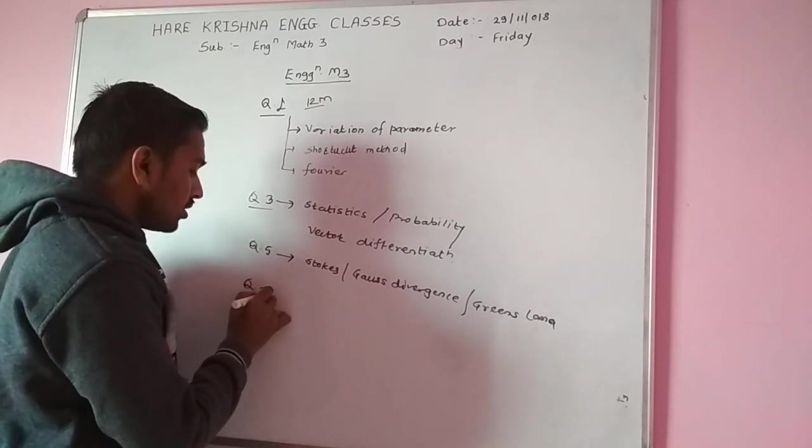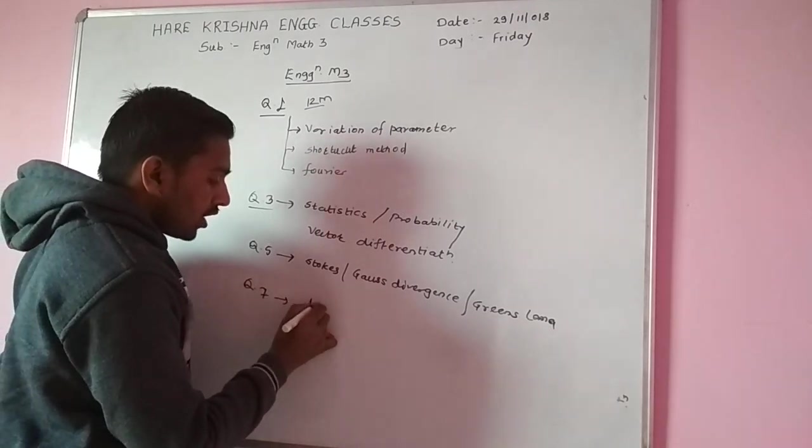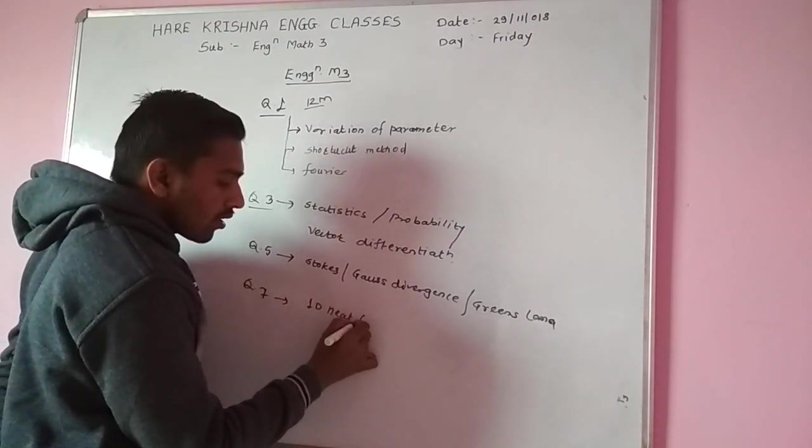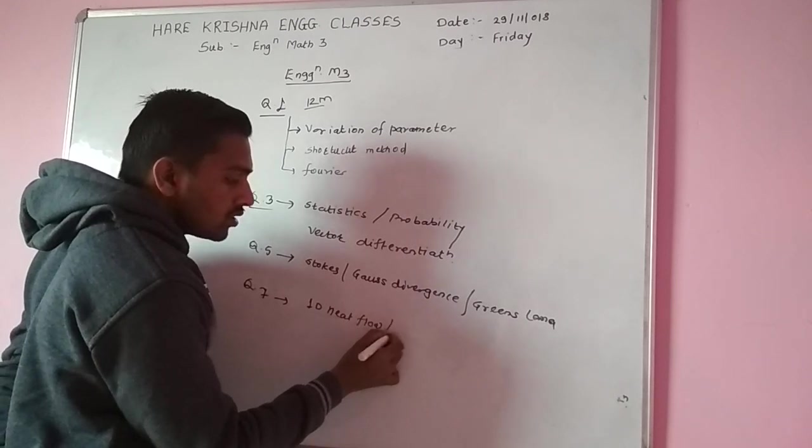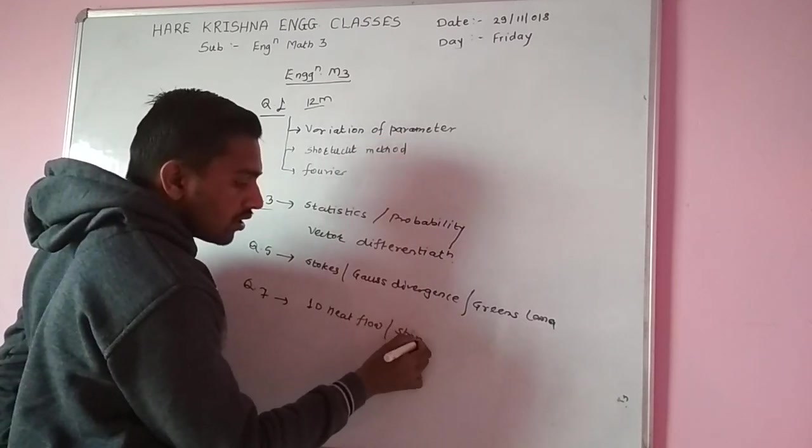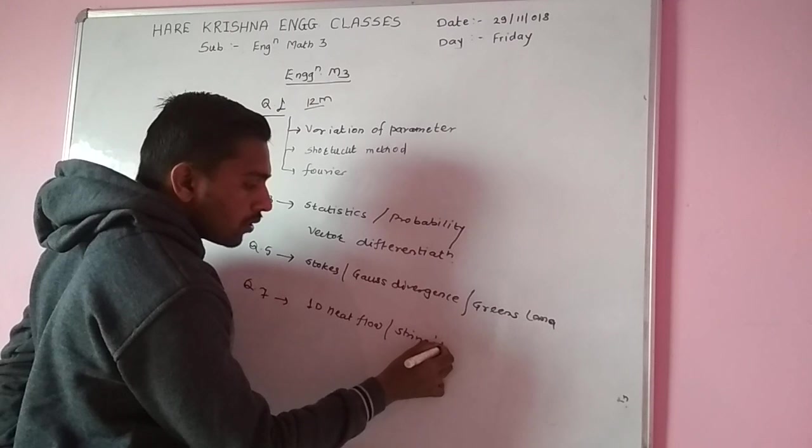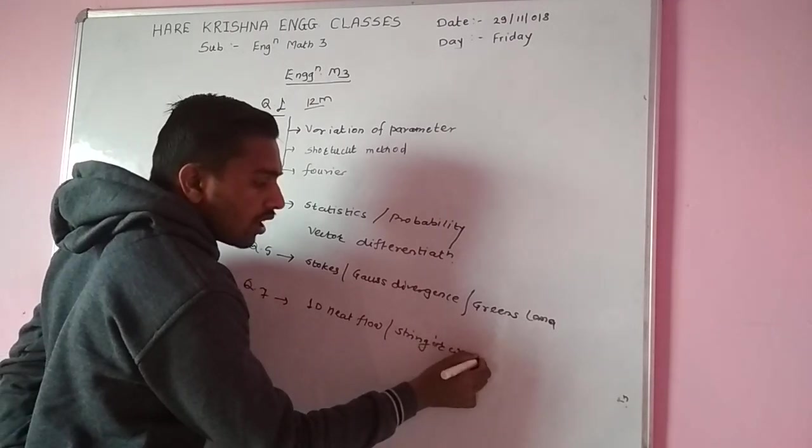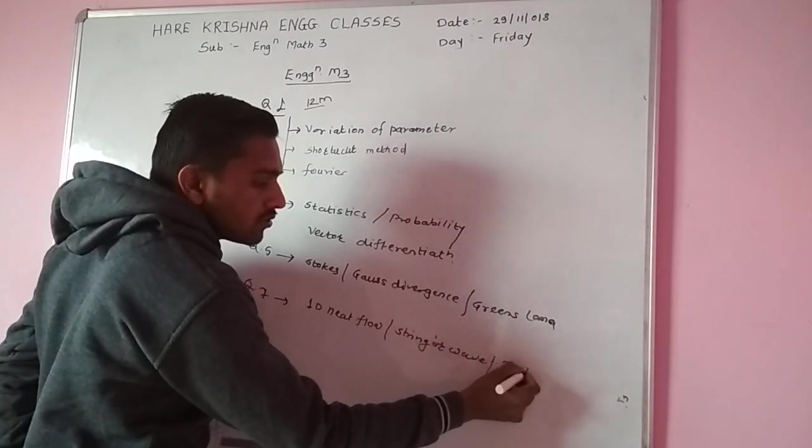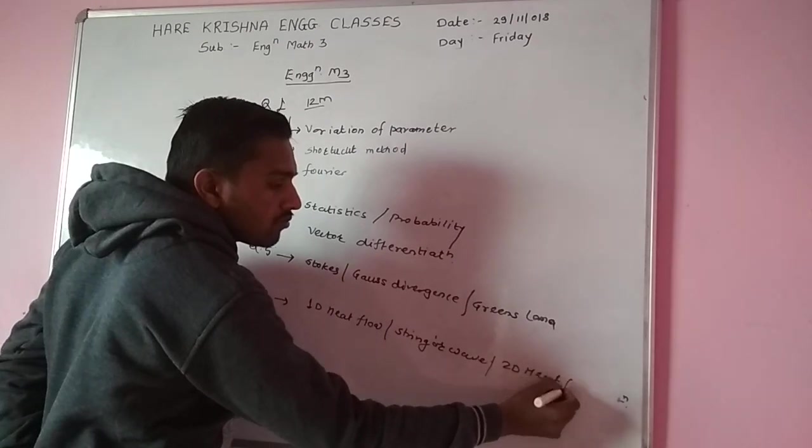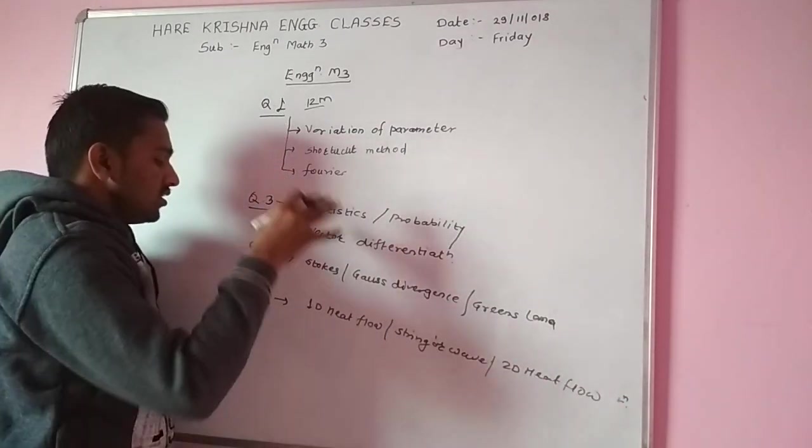Number seven: one dimensional heat flow, string or wave, and two dimensional heat flow. This is your 50 marks exam.